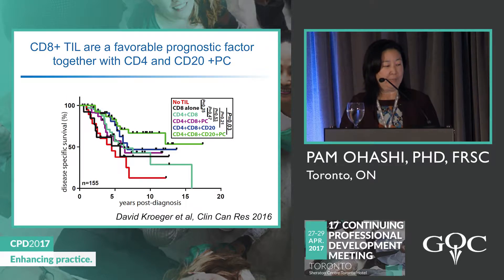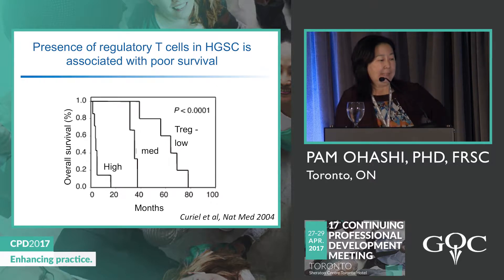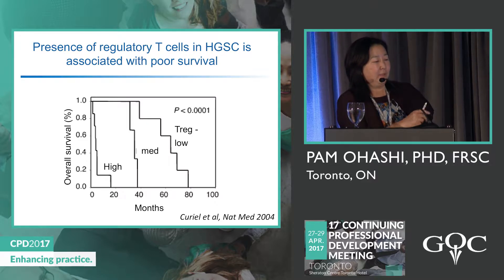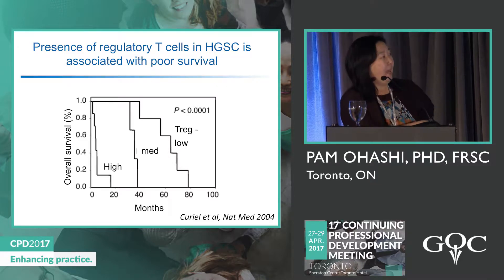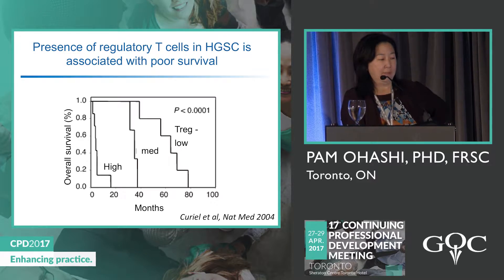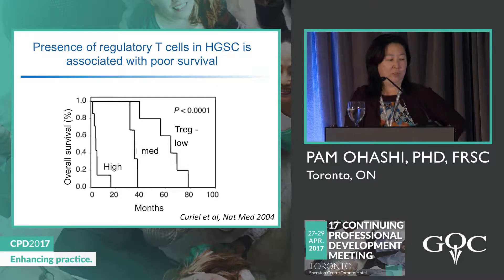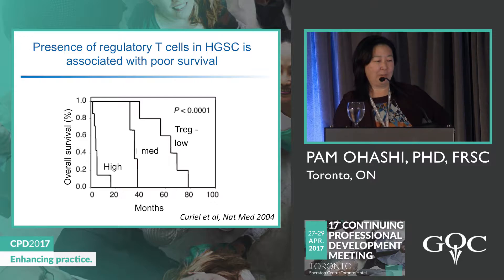A paper by Curial et al. in Nature Medicine asked how important regulatory cells are — the inhibitory population shown in yellow. Looking at stage 4 high-grade serous cancer, they showed that patients with a lot of regulatory T cells have fairly poor overall survival, whereas those with few regulatory T cells do much better. Prognosis correlates with the amount of regulatory cells found in the tumor microenvironment.